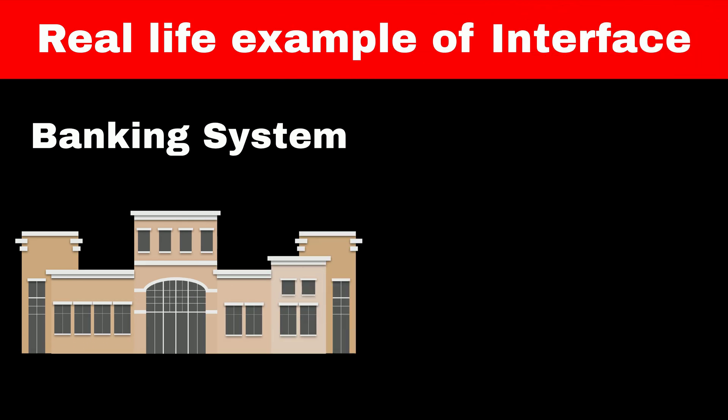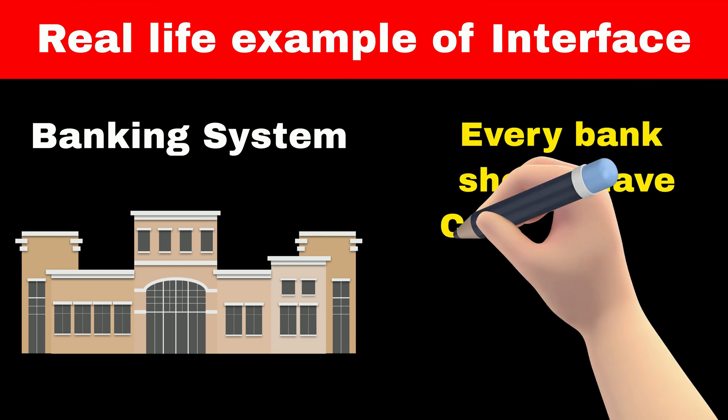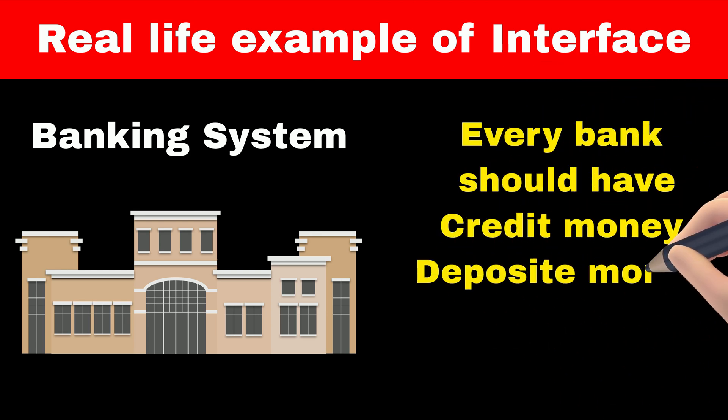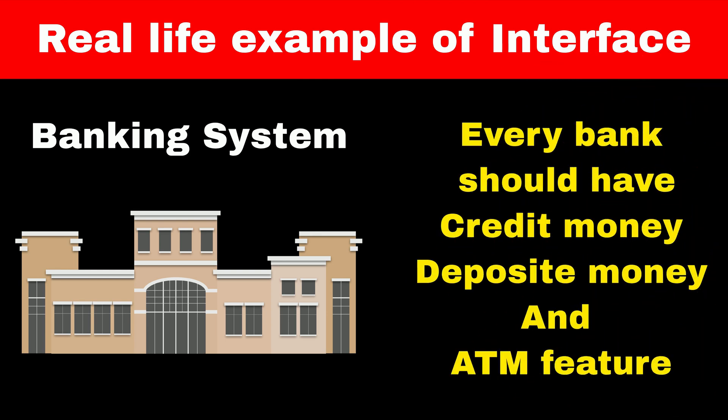Consider the example of a banking system. RBI and our government have defined some rules for the banking system, like every bank should have credit and deposit money features, and every bank should give ATM cards to their users for withdrawing money, and so on.